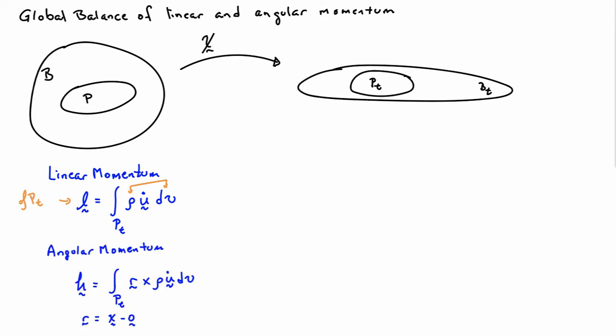The angular momentum can be similarly defined. It's simply the moment of the linear momentum, so it will be R cross rho U dot dV integrated over the part P. We'll use the symbol H to denote angular momentum, and R refers to the position vector to the reference point about which I'm computing moments. Whenever you compute moments, you have to pick a reference point, so we'll pick the origin.